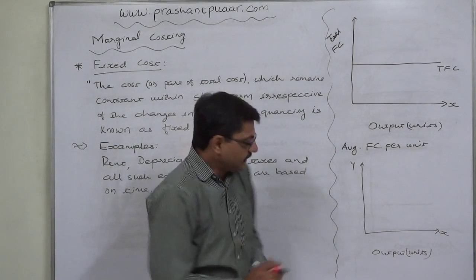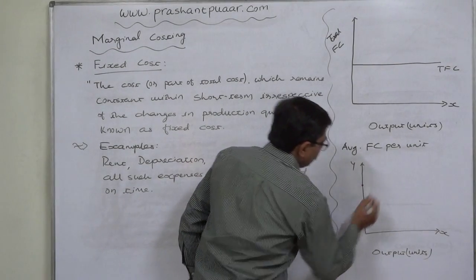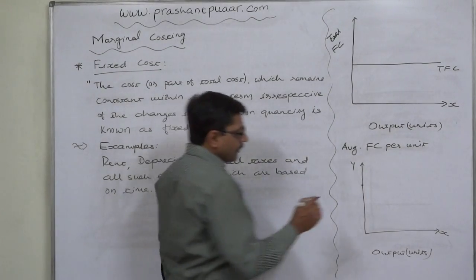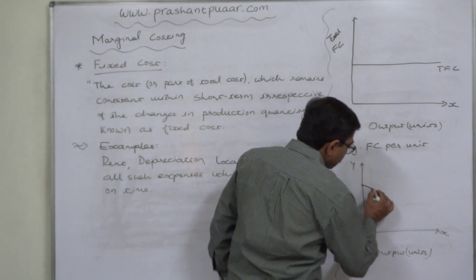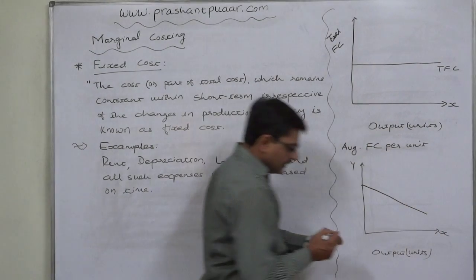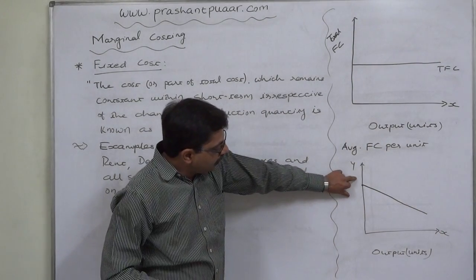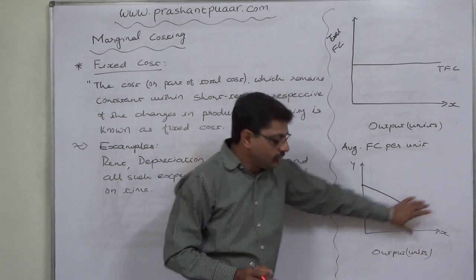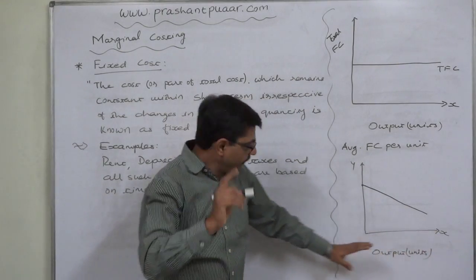At zero level of activity, fixed cost is still present at its own amount. But as we increase the production quantity, the same total fixed cost is divided or distributed among more and more number of units.